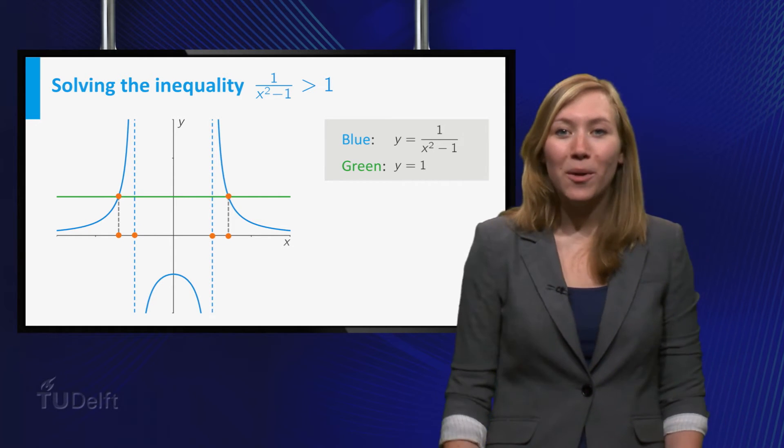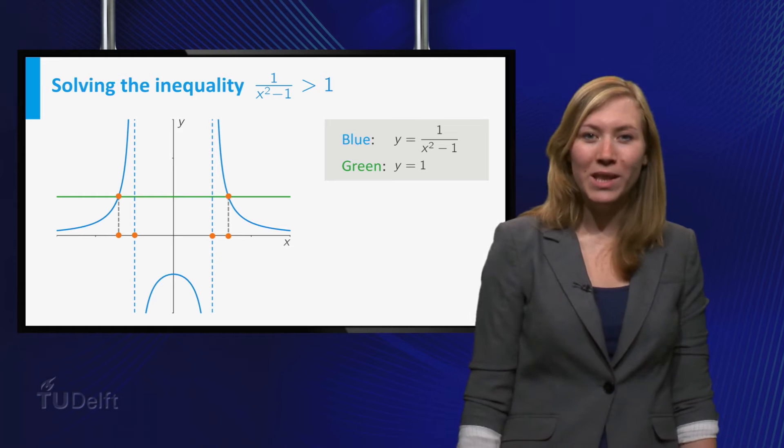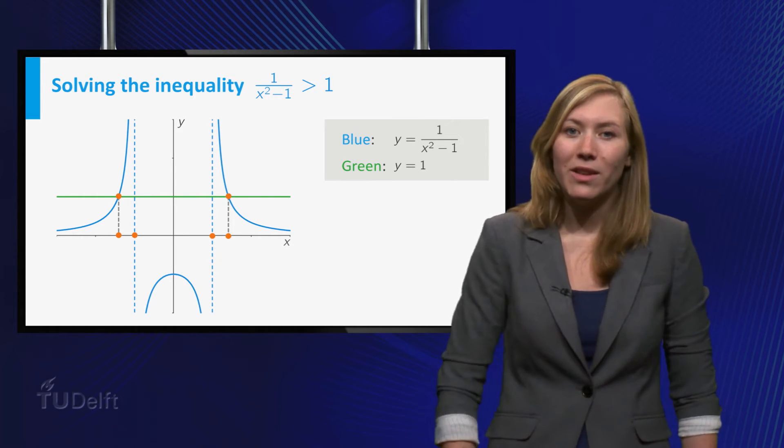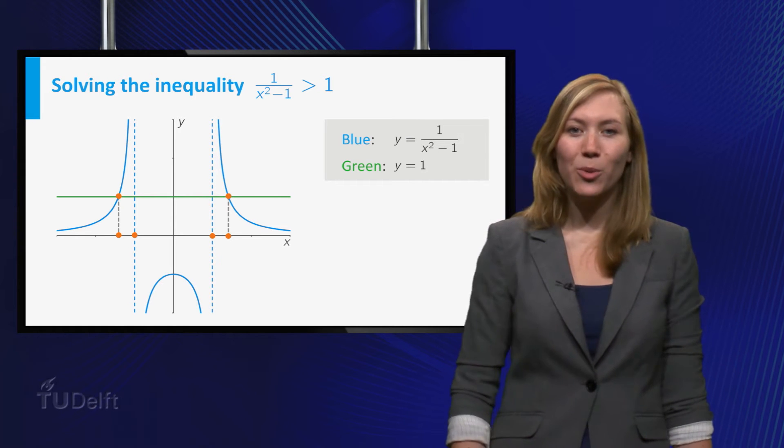And now you can see what went wrong. When we tried to solve the inequality, we found the x values where the graphs intersect, but we forgot that the left hand side is not defined at two points on the real line.